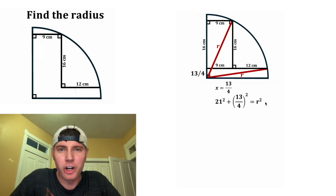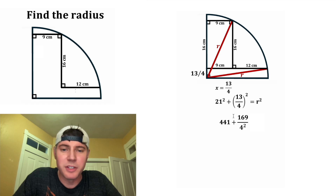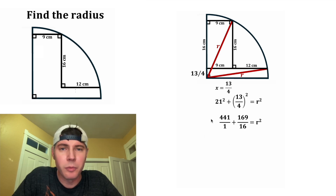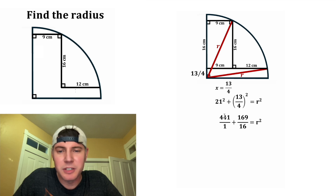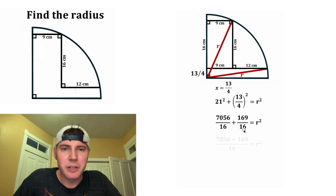Now we're ready to solve for R. 21² = 441, and (13/4)² = 169/16. So R² = 441 + 169/16. To add these, we convert 441 to a fraction: 441/1, then multiply top and bottom by 16 to get a common denominator of 16. 16 × 441 = 7056, so we have 7056/16 + 169/16 = 7225/16.